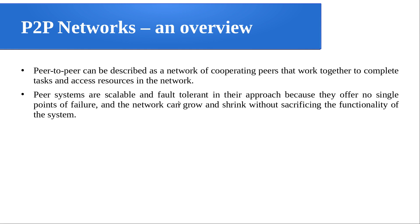Peer systems are scalable and fault tolerant. Scalable means any machine can dynamically join or leave the network. Fault tolerant is because they offer no single point of failure — in client-server architecture if the server fails the system fails, but in P2P if a particular peer fails and is not able to function properly, that is not going to affect the rest of the machines. The network can grow and shrink without sacrificing the functionality of the system.